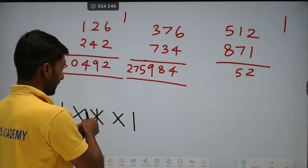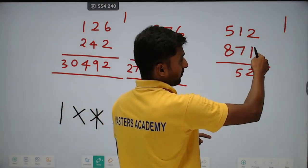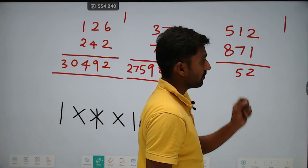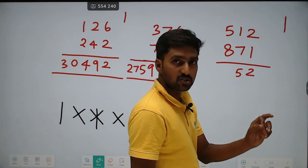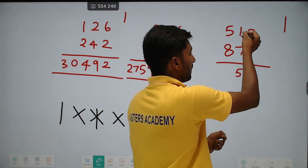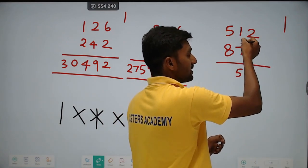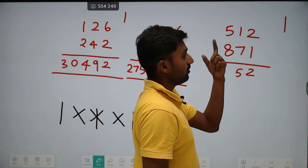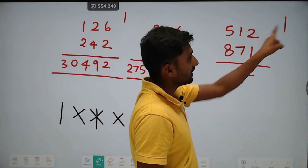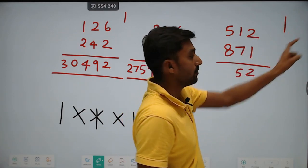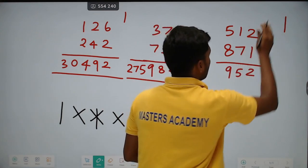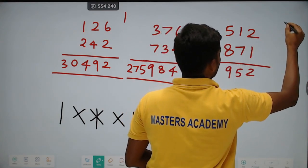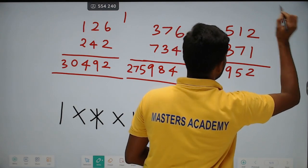Straight, then cross, then again star: 1 into 5 is 5, plus 8 into 2 is 16, so 5 plus 16 is 21, plus 1 into 7 is 7. So 21 plus 7 is 28. Already carry 1 available, so 29. Write 9, carry 2. Again carry, it is 2.